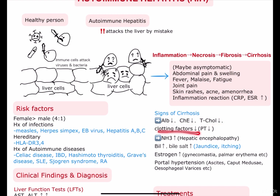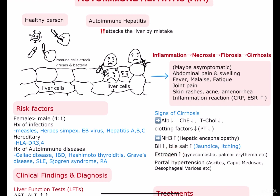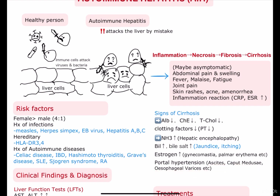If the disease progressed to cirrhosis, we can start to see the signs and symptoms of cirrhosis. The liver is an organ where albumin, cholinesterase, cholesterol, and clotting factors are produced, so in cirrhosis we can see a decrease in all of them. Also, we can see an increase in ammonia causing hepatic encephalopathy, and an increase in bilirubin and bile salts causing jaundice and itching. There is also an increase in estrogen, so we can see gynecomastia, palmar erythema, etc. And if there is portal hypertension, then ascites, caput medusae, esophageal varices, and edema can be seen.